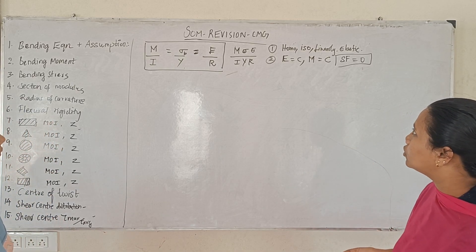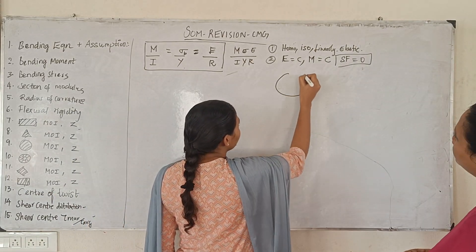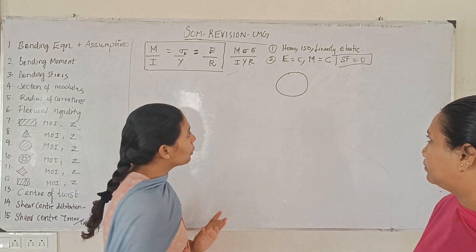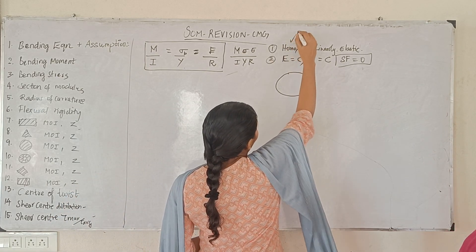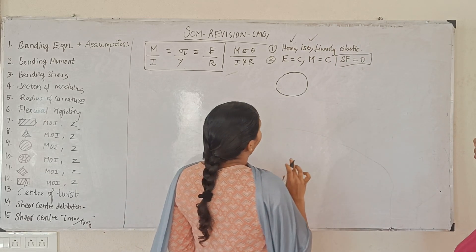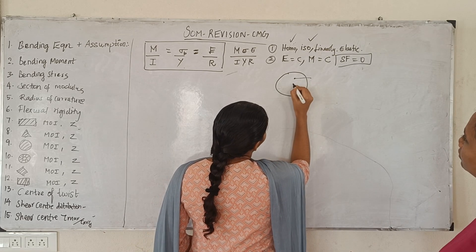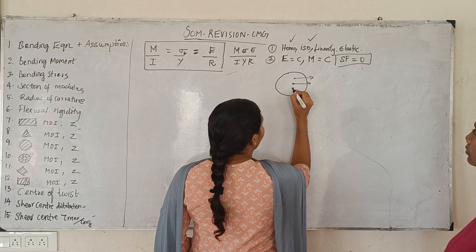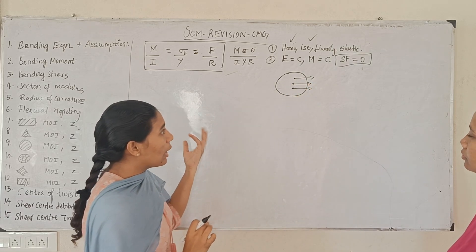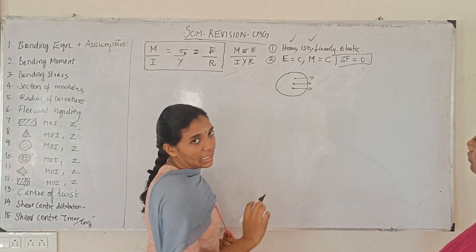Homogeneous and isotropic materials: homogeneous means same elastic properties at any point in a given direction.